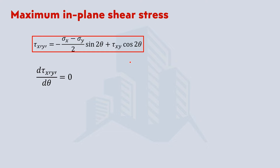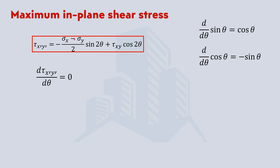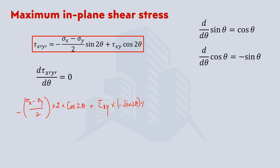Recalling the basics of differentiation, the differentiation of sine theta with respect to theta is cos theta, and for cos theta it will be minus sine theta. Now let's do the calculations. The coefficient (sigma x minus sigma y divided by 2) stays the same. Since this is sine 2 theta, it will become cos 2 theta, and the differentiation of 2 theta will give a factor of 2. So multiplying by 2 gives 2 cos 2 theta. Similarly, the coefficient tau xy: the differentiation of cos 2 theta will be minus sine 2 theta, and the differentiation of 2 theta gives another factor of 2. Equating this to zero.